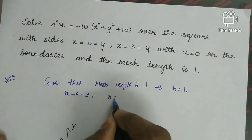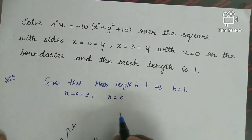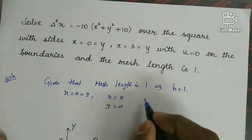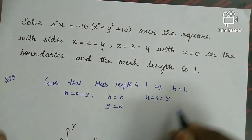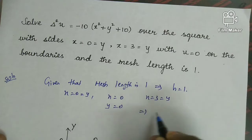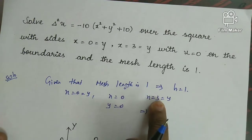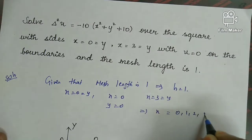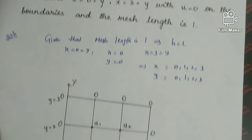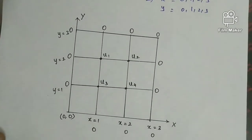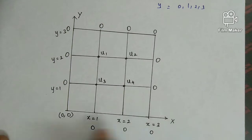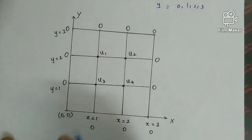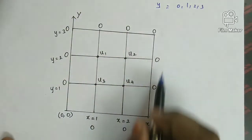With x going from 0 to 3 and y from 0 to 3, and mesh length 1, the interior mesh points are u1, u2, u3, and u4. Looking at the diagrammatic representation, the grid has unit spacing in both directions. The boundary value is u equal to 0 on all boundaries.